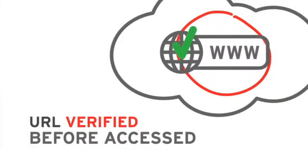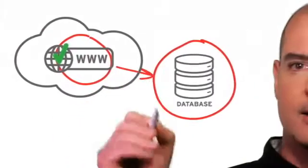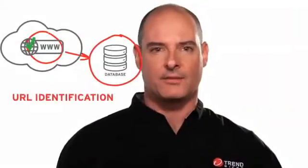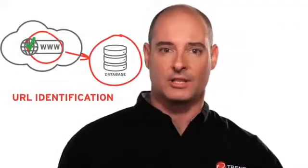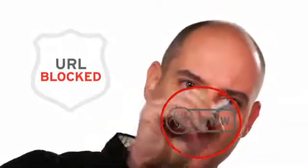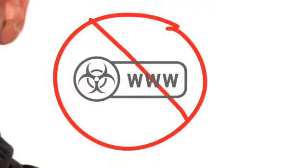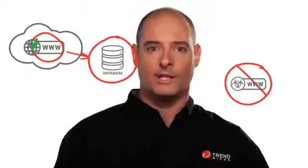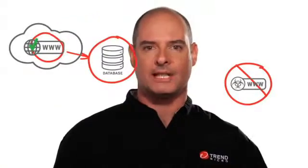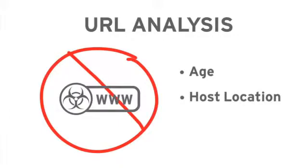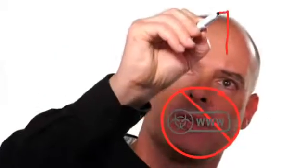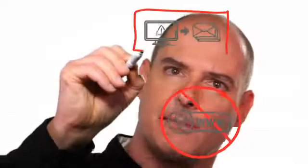First, we check the Web Reputation database to see if the URL has been identified as malicious. If it is, we block the PC from accessing it. If we have not seen a URL, we immediately analyze it to determine the age of the domain, the location of the site, the vagrancy of the server, and any association with a known spamming domain.